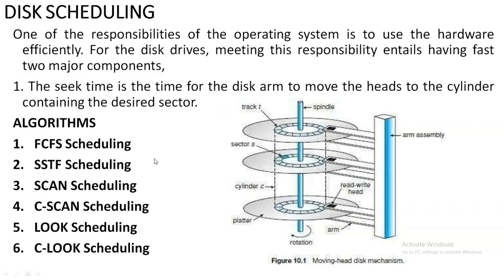Disk scheduling is about whatever data you are going to store in storage — in our case, disk storage management. This disk is going to have an arm assembler and cylindrical plates that contain all the information or data you store. The spindle will be rotating and the cylinders will rotate accordingly. The arm has a magnetic tape which is going to read the data. This is how data will be read from the disk.